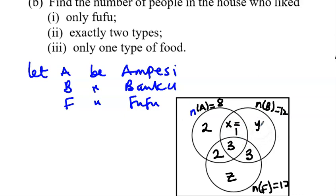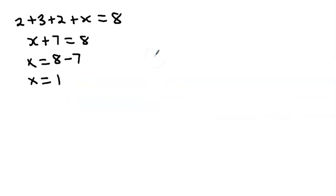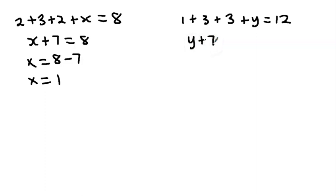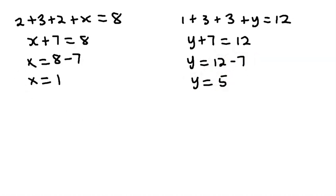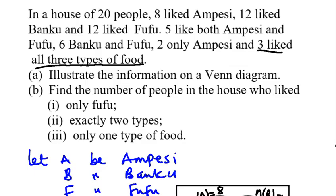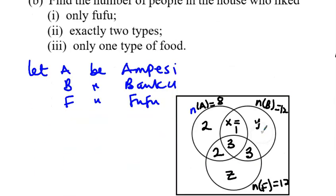Now we can find y using the Banku circle total of 12. Adding all values in the Banku circle: 1 (Ampesi & Banku only) + 3 (centre) + 3 (Banku & Fufu only) + y = 12. That gives y + 7 = 12, so y equals 12 minus 7, which is 5. The Banku-only region is 5.